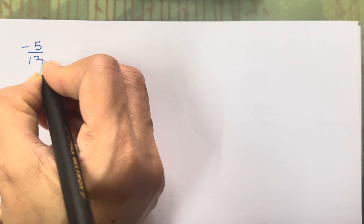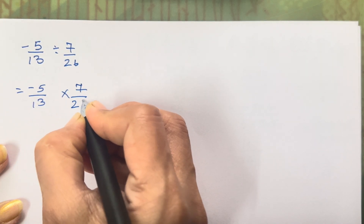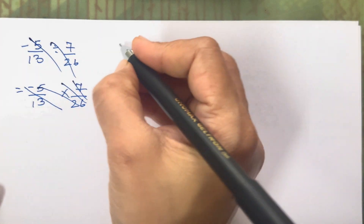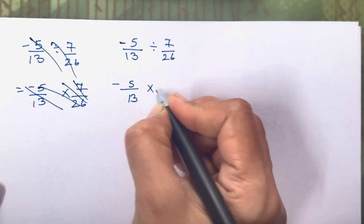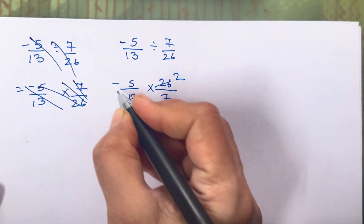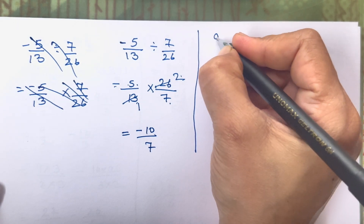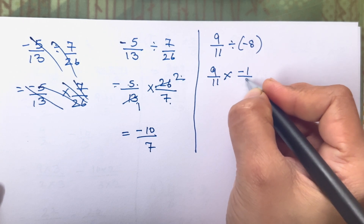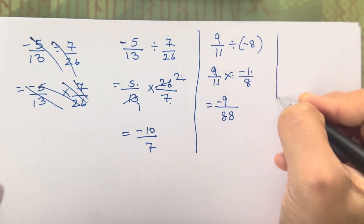Minus 5 upon 13 divided by 7 upon 26: keep minus 5/13 and reciprocate to multiply by 26/7. Now 13 and 26 reduce — 26 = 13 × 2, so they simplify. That gives minus 5 × 2 = minus 10 over 1 × 7 = 7, so the answer is minus 10 upon 7. The last sum is 9 upon 11 divided by minus 8: multiply by minus 1/8 to get minus 9 upon 88.